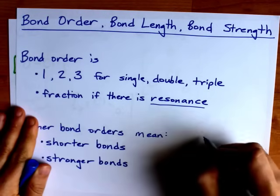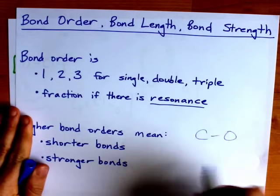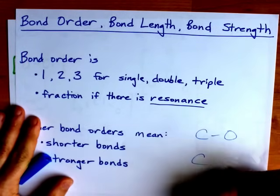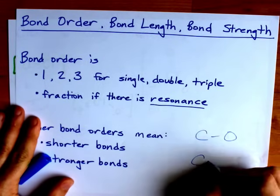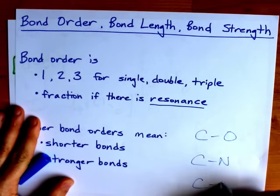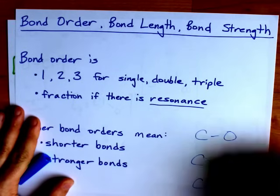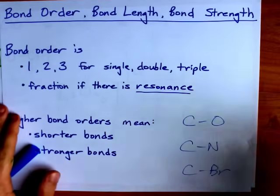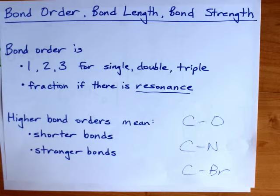I do want to emphasize, I use carbon-oxygen for all of these. As soon as you start intercomparing carbon-oxygen to like carbon-nitrogen, carbon-bromine, I would never intercompare these types of bonds because they're not even between the same types of atoms. Okay?